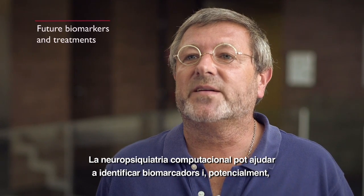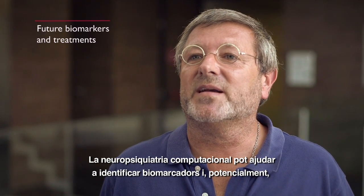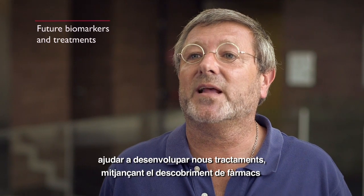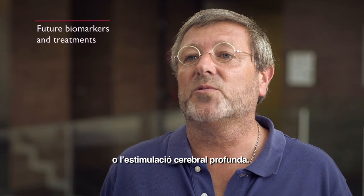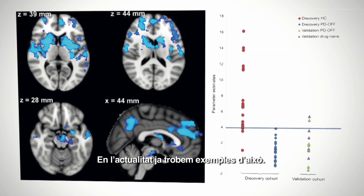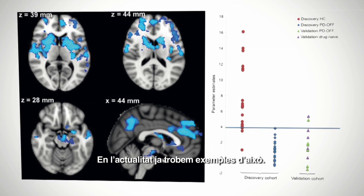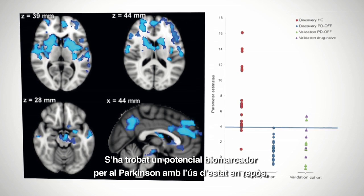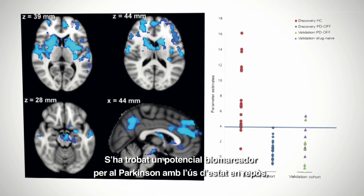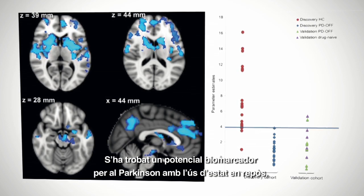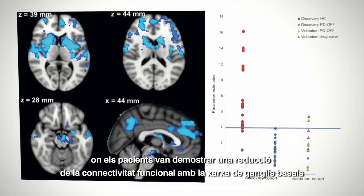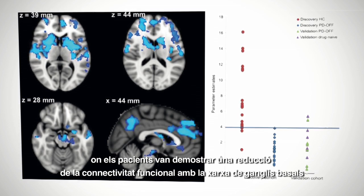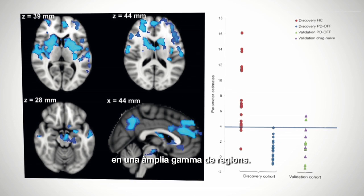Computational neuropsychiatry can help identify biomarkers and potentially help develop new treatments through drug discovery or deep brain stimulation. For example, a potential biomarker for Parkinson's was found using resting state, where patients showed reduced functional connectivity with the basal ganglia network across a wide range of regions.